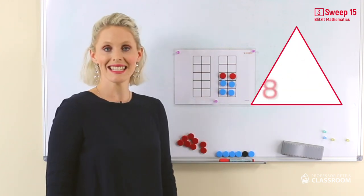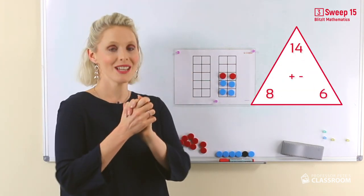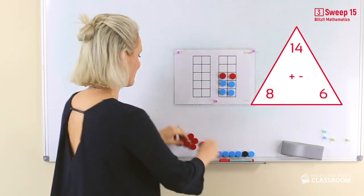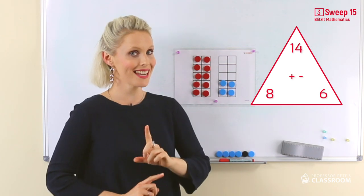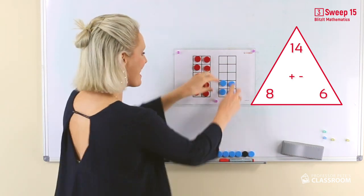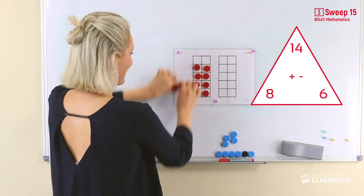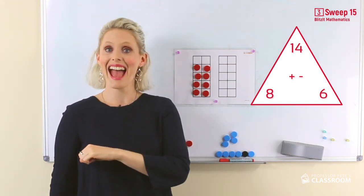14, 8, and 6 are connected. So the turnaround, 14 take away 6, has to be 8.